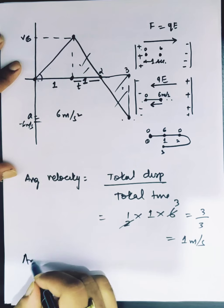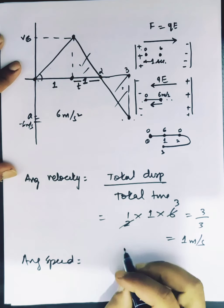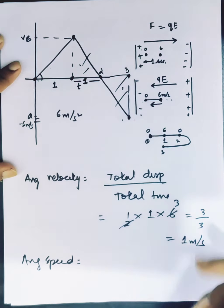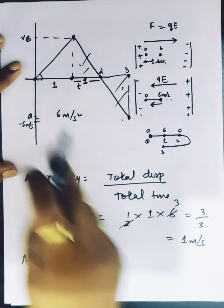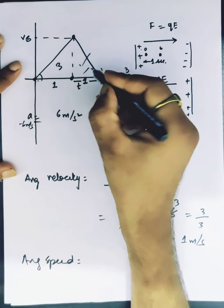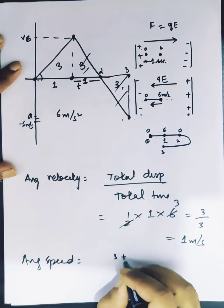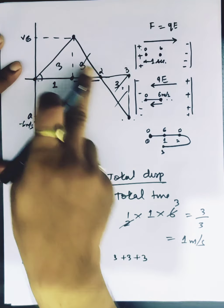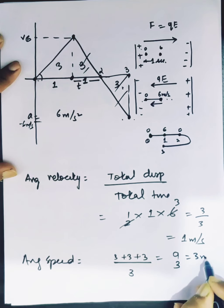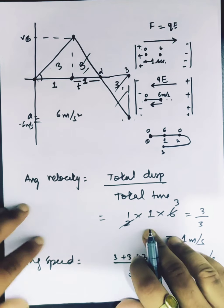And average speed, the triangles will not cancel, everything will be added. Total distance will be taken from this one and this one. Here we have total half base into height is 3, so this is 3. This triangle is similar and this is also 3. So 3 plus 3 plus 3, three triangles add, divided by time 3, we will get 9 by 3, that is 3 meters per second.